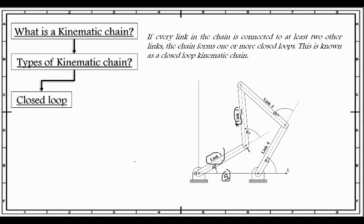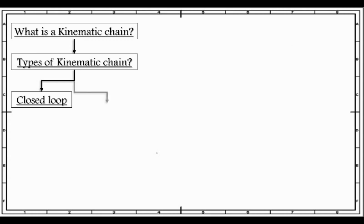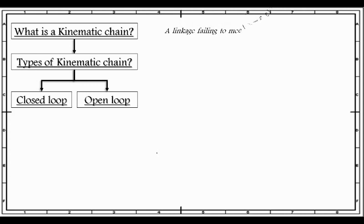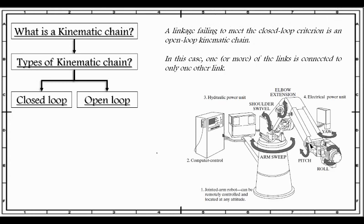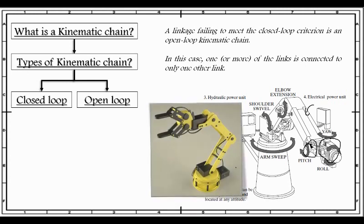The kinematic chain is also classified as an open loop kinematic chain. A link failing to meet the closed loop criteria results in an open loop kinematic chain. In this case, one or more of the links is connected to only one other link. As we can see in the figure of a joint arm robot, the hand or arm of the robot, which can be considered as one link, is connected to only one other link — it is only connected at one point. Thus, this joint arm robot can be termed as an open loop kinematic chain, and this is a practical example of one.